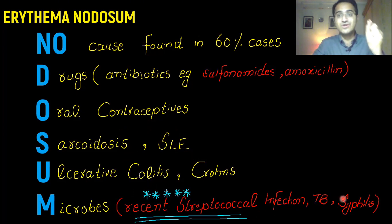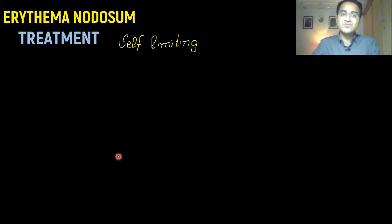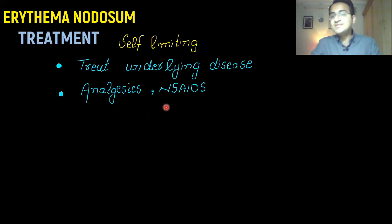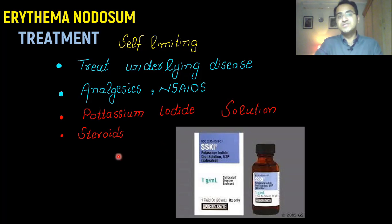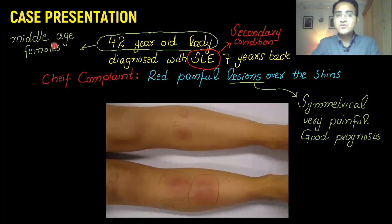Erythema nodosum is a condition secondary to many underlying diseases, so it's important to look for the underlying cause. It is a self-limiting disease, but treatment involves addressing the underlying disease process. Pain can be controlled by analgesics and NSAIDs, potassium iodide can be used for the lesions, and steroids are also used for treatment.